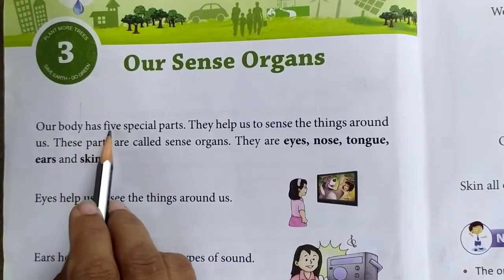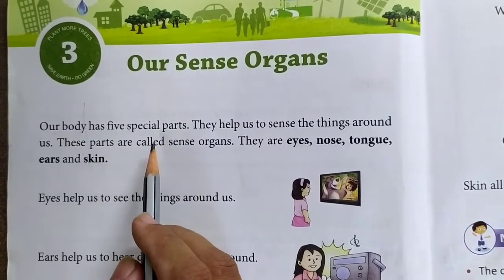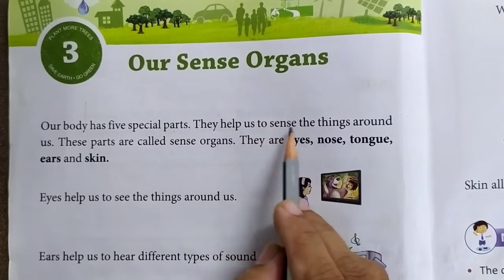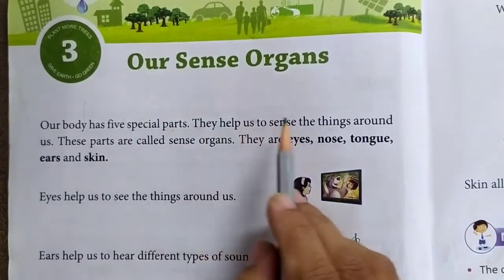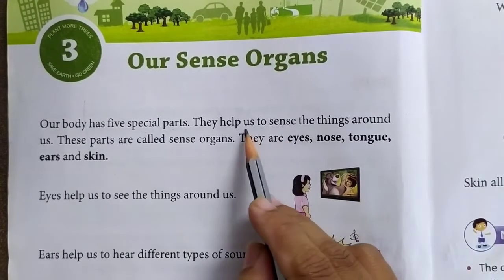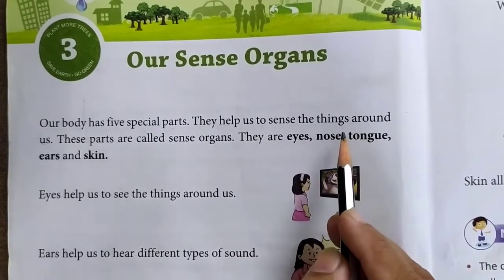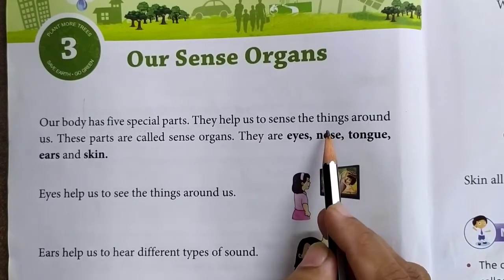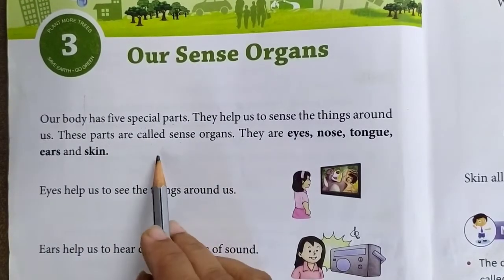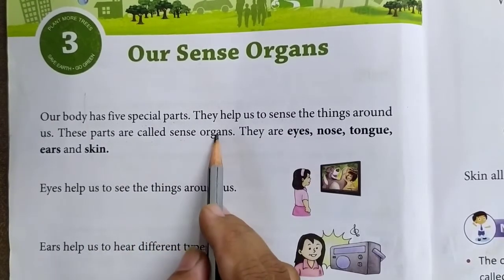Our body has 5 special parts. Hamare sharir mein 5 special ang hain — special matlab ki vishesh part hai. They help us to sense the things around us. Woh hamein apne aaspaas ki cheezon ko samajhne mein madad karte hain. These parts are called sense organs. In bhaagon ko indriya ke naam kaha jaata hai.